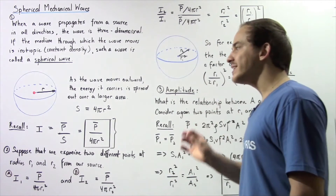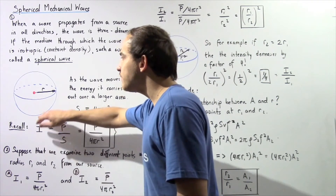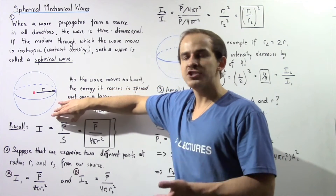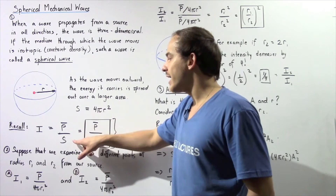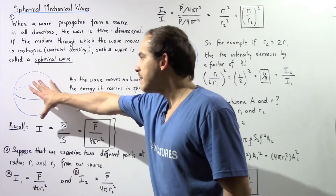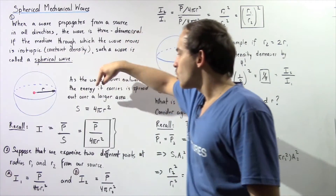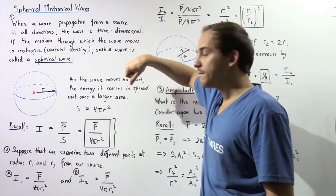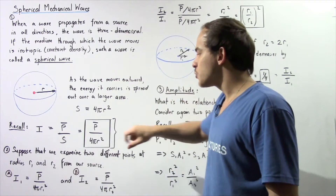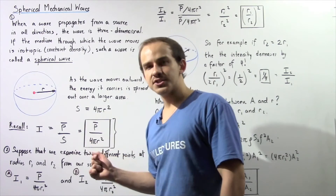Recall that the intensity of a wave is equal to the average power — which is simply the rate of change of energy — divided by the area of our shape. The area of this shape for a sound wave is simply the surface area of a sphere, given by 4π multiplied by radius squared. So we replace S with this formula.